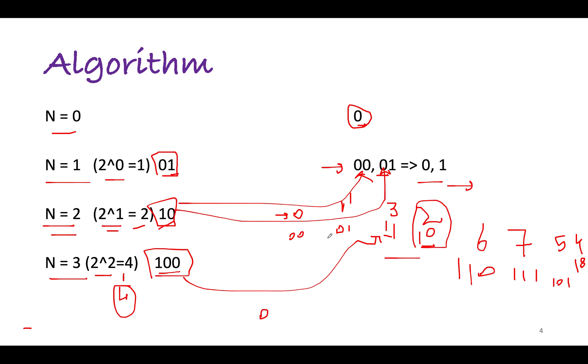So the answer at n equals 3 is 0, 1, 3, 2, 6, 7, 5, 4. So this is not 18, this is 100. And if you look at their binary representation: 000, 001, 011, 010, 110, 111, 101, 100.